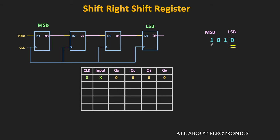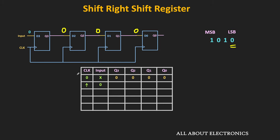Starting from the LSB, to shift this 0 into the shift register, first we need to apply this 0 bit to the input. Before the arrival of the clock pulse, if we see the inputs for all the registers, then they are 0, 0, and 0. Once the clock pulse arrives, all 4 flip-flops will respond to their present inputs — the output of all stages will become 0. Whatever data was earlier stored in the last flip-flop will get discarded.